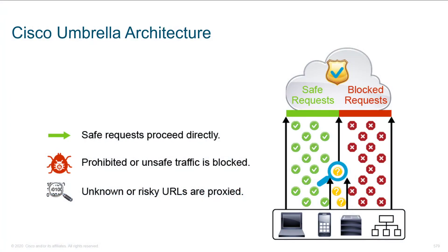Let's talk about Cisco's Umbrella architecture. One of the core components of Umbrella is their DNS analysis. Much of the intelligence comes from an acquisition called OpenDNS — some of you may have used OpenDNS before it was acquired by Cisco. Since then, they've taken all the intelligence and tied it into the rest of Cisco's security portfolio, so it's really stronger than it's ever been.